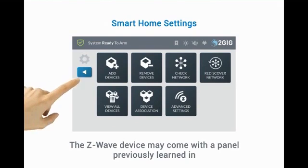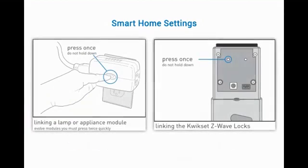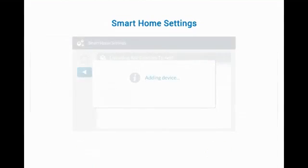The Remove Device feature defaults its memory, allowing the user to learn the Z-Wave device into the controller. Z-Wave devices are learned in in various ways. For example, a lamp module requires a double tap, while a quick set door lock requires a single press of the Learn button.